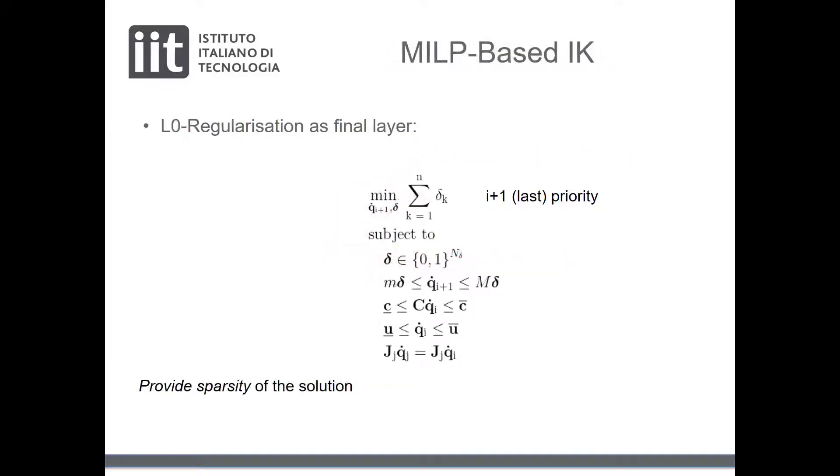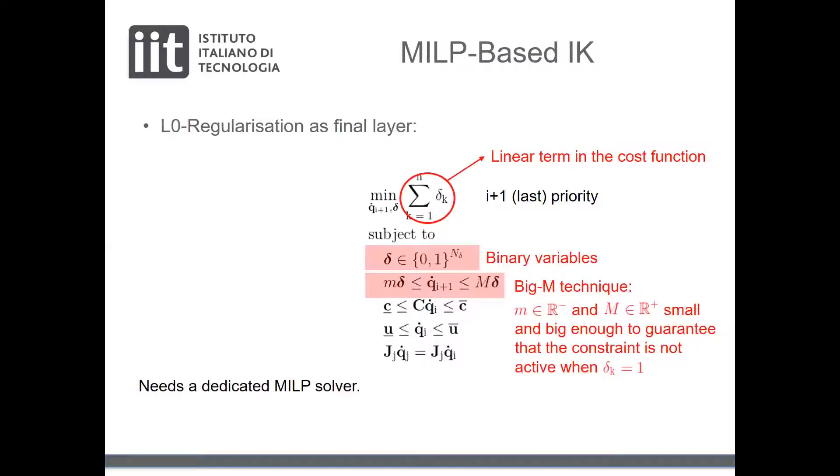An alternative formulation which ensures a sparse solution is to employ a more strict regularization, the L0 regularization. The L0 regularization is implemented considering a set of auxiliary binary variables delta, each one associated to a joint velocity variable. In particular, we can see again a linear cost plus a constraint, called big-M, where two parameters are chosen so that when the binary variable is equal to one, the associated joint velocity is not constrained. Notice that the use of binary variables requires a dedicated MILP solver to solve this type of problems.